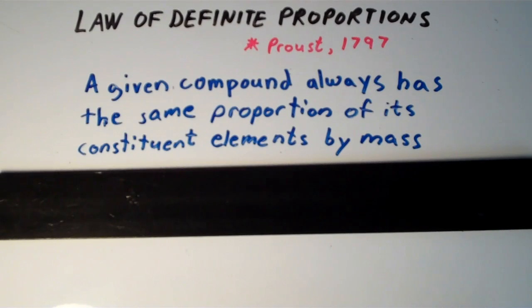The law of definite proportions says that a given compound always has the same proportion of its constituent elements by mass. What does that mean? Well, let's go over an example.